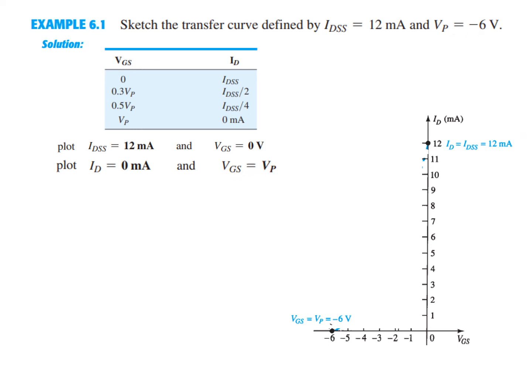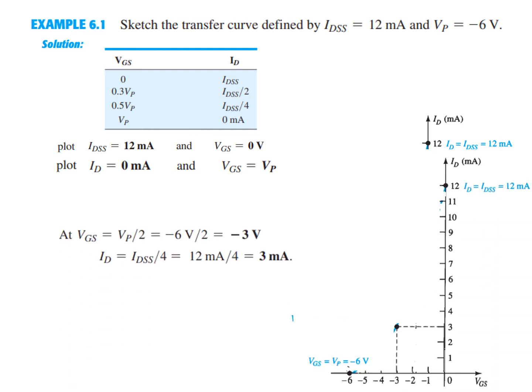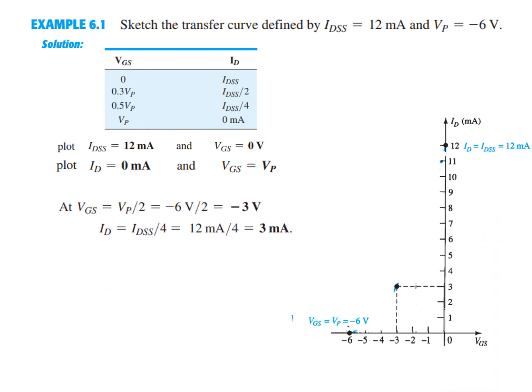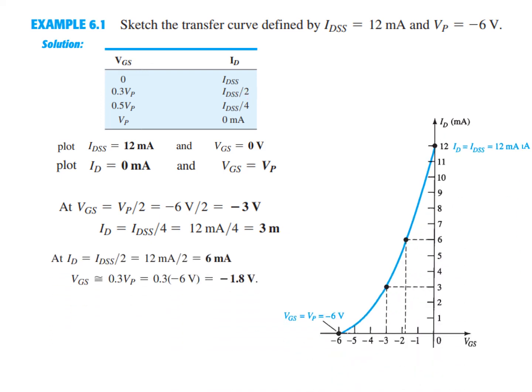The second point: when ID = 0, VGS = VP = −6 V, so we mark −6 on the VGS axis. Third point: VGS = VP/2 = −3 V, so ID = IDSS/4 = 3 mA — we mark the intersection of −3 V and 3 mA. Fourth point: when ID = IDSS/2 = 6 mA, VGS = 0.3 × VP = 0.3 × −6 = −1.8 V. Connecting these four points with a nonlinear curve gives us the final transfer curve.